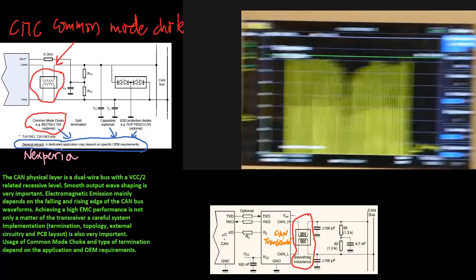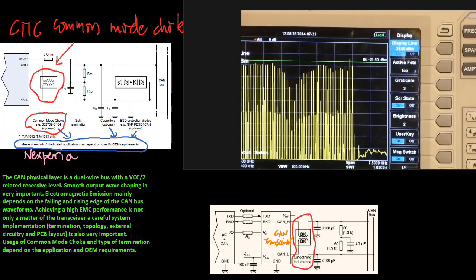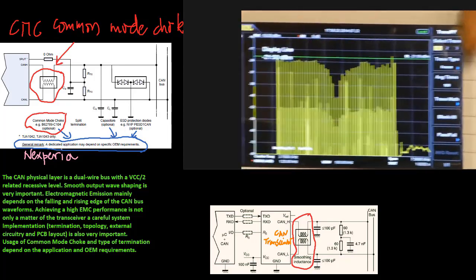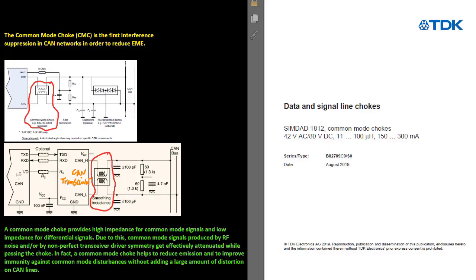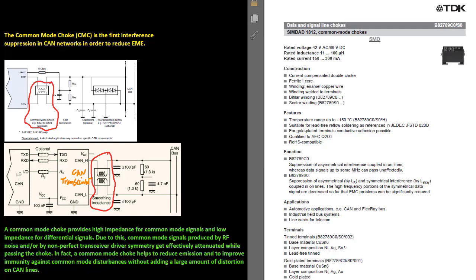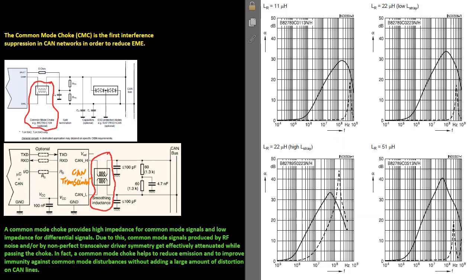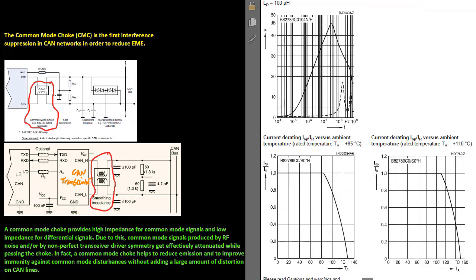Usage of common mode choke and type of termination depend on the application and OEM requirements. Common mode choke provides high impedance for common mode signals and low impedance for differential signals. Due to this, common mode signals produced by RF noise, by non-perfect transceiver driver symmetry, get effectively attenuated while passing the choke. In fact, a common mode choke helps to reduce emission and to improve immunity against common mode disturbances without adding a large amount of distortion on CAN lines.